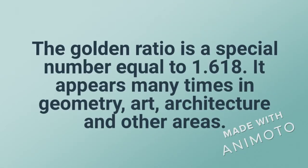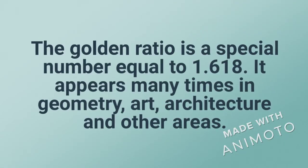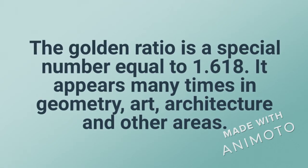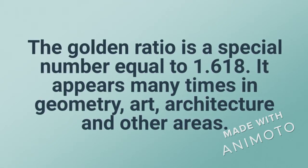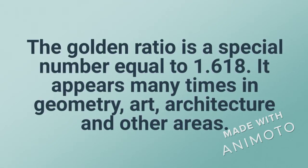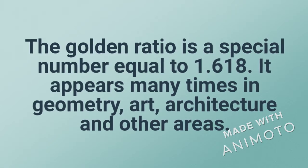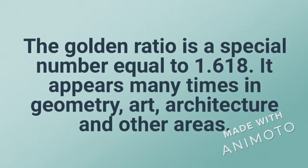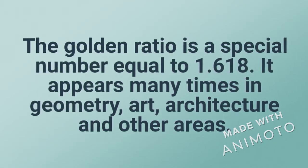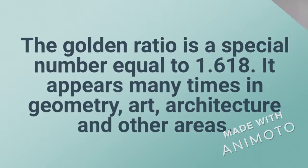The golden ratio is a special number approximately equal to 1.618. It appears many times in geometry, art, architecture, and other areas. The golden ratio exists when a line is divided into two parts, and the longer part A divided by the smaller part B is equal to the sum of A plus B divided by B.